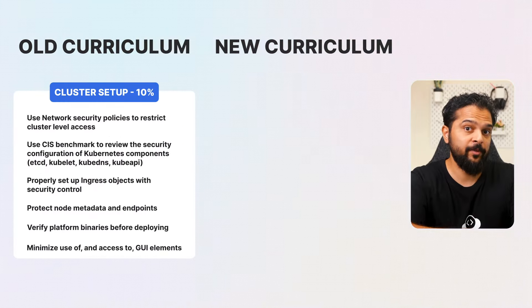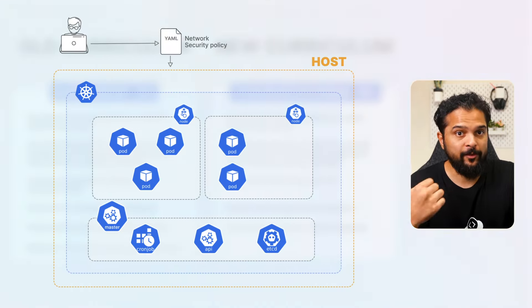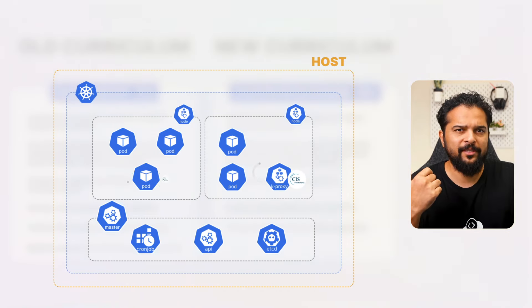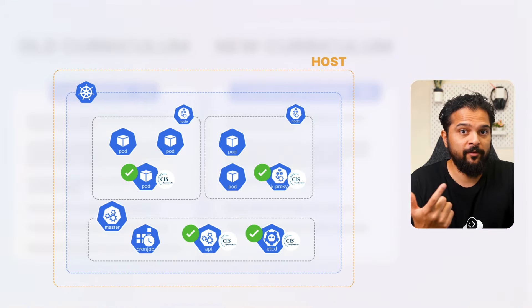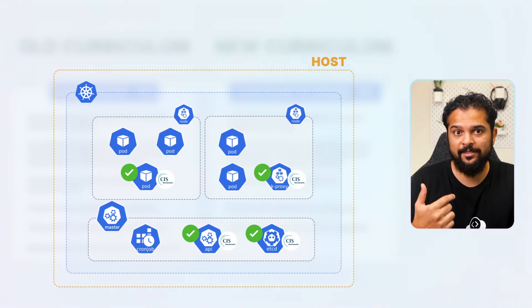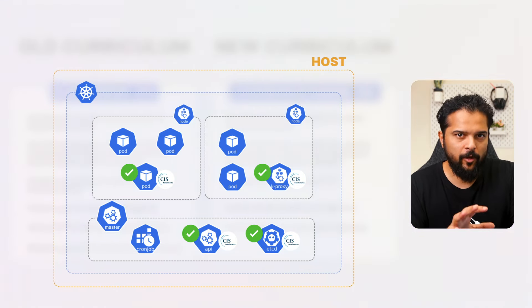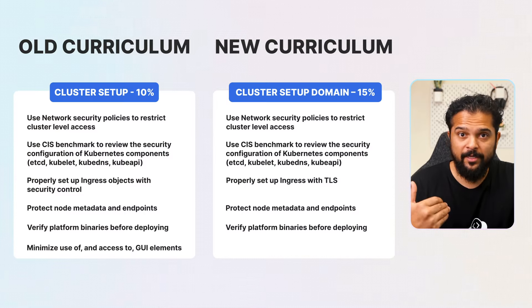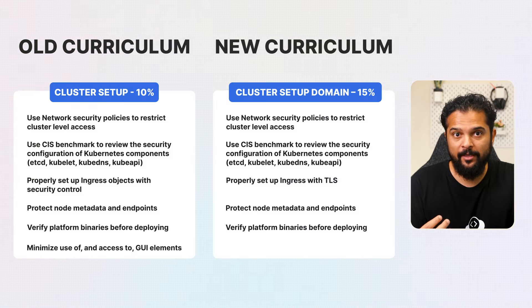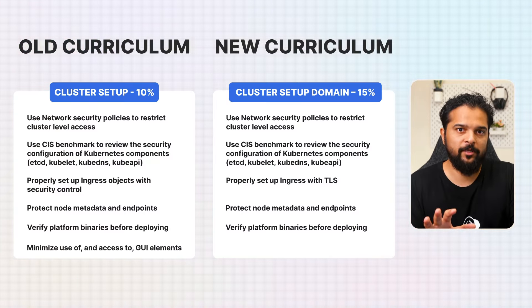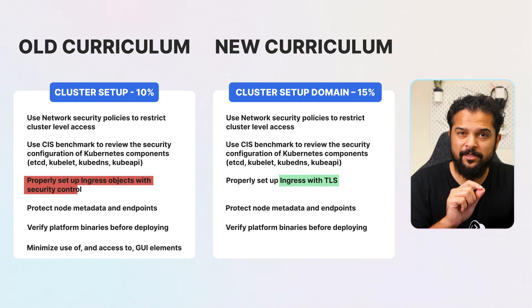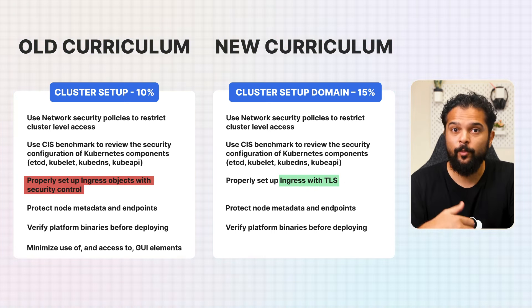Starting with the cluster setup domain, its weight will increase from 10 percent to 15 percent. Previously, this domain included configuring network security policies to restrict cluster-level access, using the CIS benchmarks to review the security configurations of key Kubernetes components such as etcd, the kubelet, kube-dns, and kube-apiserver, and properly setting up ingress objects with security controls. In the updated curriculum, many of these principles remain but there are notable changes.